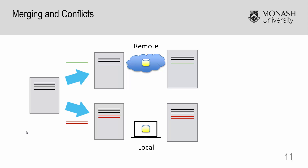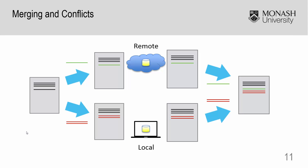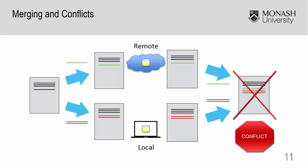Basically somebody beat you to committing their changes first. So what do we do? When we pull down the remote repository, hopefully the changes don't affect your changes at all, and then Git can automatically merge the new changes together. But if Git finds that it isn't that easy to put together all the changes, Git will flag it as a conflict.